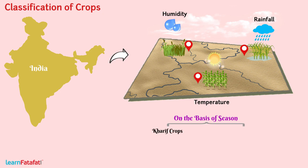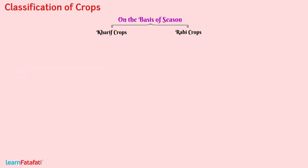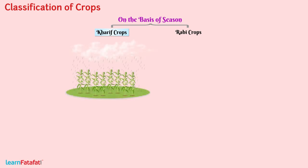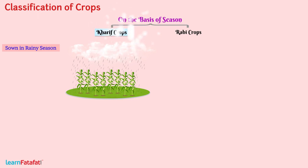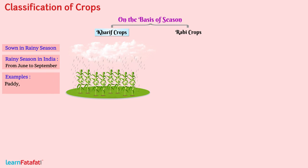Kharif crops: The crops which are sown in the rainy season are called Kharif crops. In India, the rainy season is from June to September. Some of the Kharif crops are paddy, maize, soya bean, groundnut, cotton, etc.